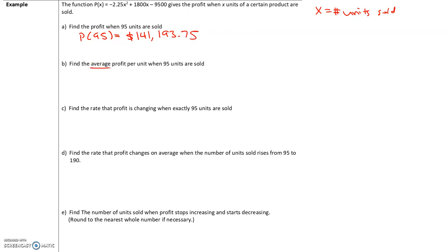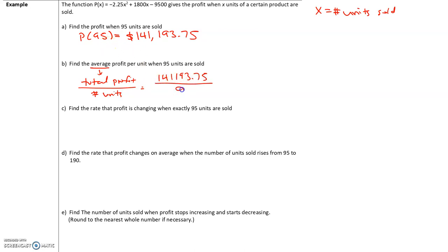The word average means we take the total profit and divide it by how many units are giving us that profit. So the average profit is the total profit divided by the number of units. Our total profit is $141,193.75 when 95 units are sold. Dividing, the average profit per unit is $1,486.25 at 95 units.